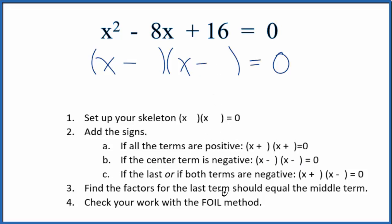Now we're going to find the factors that equal the last term. Those factors should add up to the middle term here. So 16, we could have 16 times 1, that would equal 16, 8 times 2, or 4 times 4. So those are the factors.